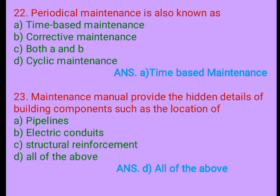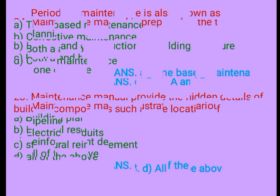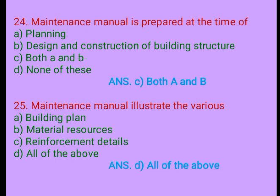Question 23. Maintenance manual provides the hidden details of building components such as the location of: A. Pipelines, B. Electrical conduit, C. Structural reinforcement, D. All of the above. Answer: D. All of the above. Question 24. Maintenance manual is prepared at the time of: A. Planning, B. Design and construction of building structure, C. Both A and B, D. None of these. Answer: C. Both A and B.